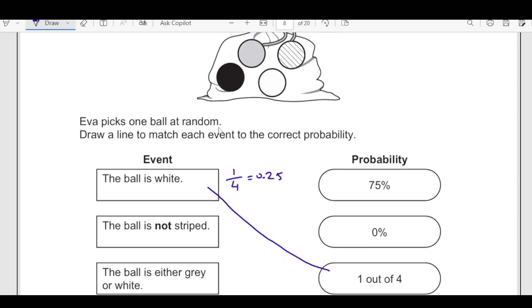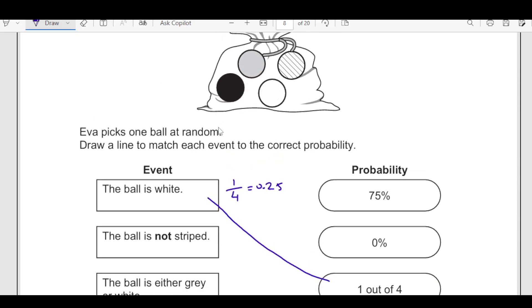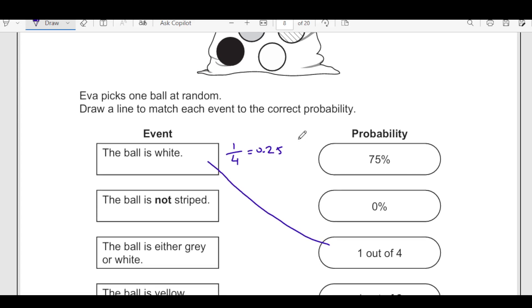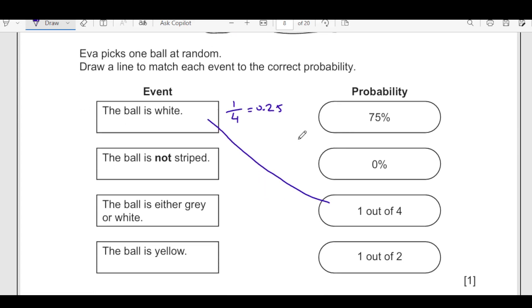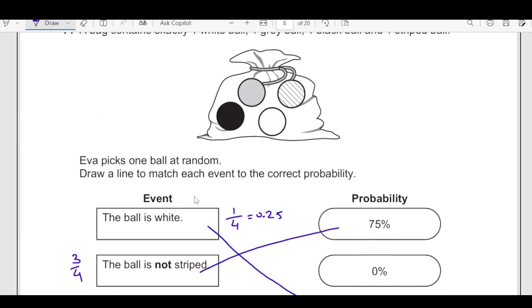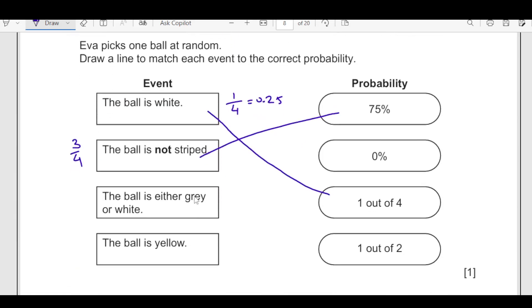The ball is not striped means they are 3 balls other than this one. So that will be 3 over 4. 3 over 4 is 3 quarter, 3 quarter is 75 percent here. The ball is either grey or white, there is one grey ball and one white ball. That means 2 out of 4. 2 out of 4 is 2 over 4, which is a half, half is 1 out of 2. The ball is yellow, there is no yellow ball. So that will be 0 percent.